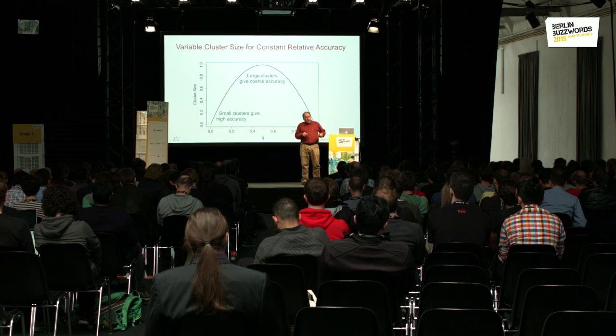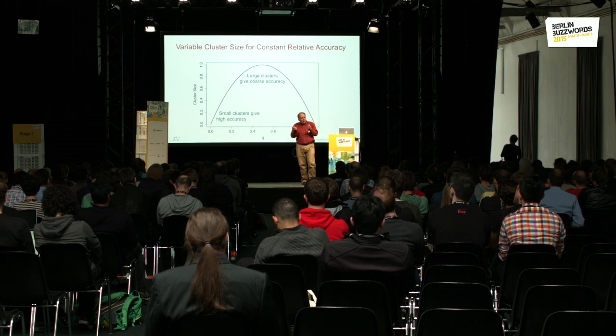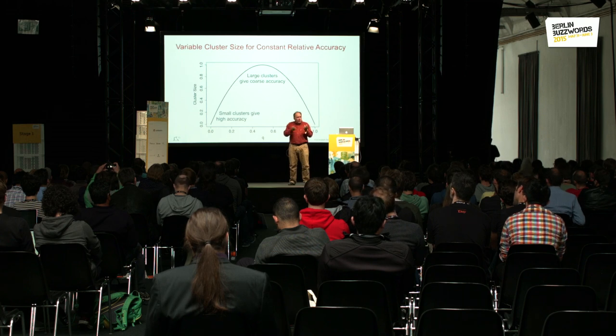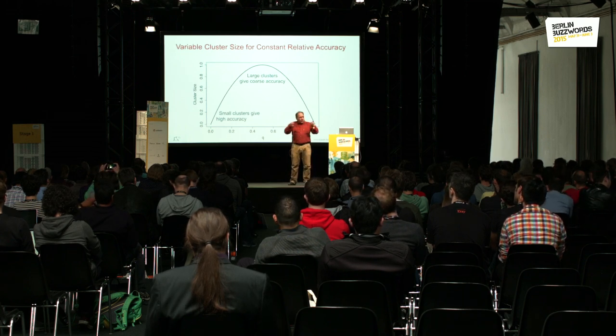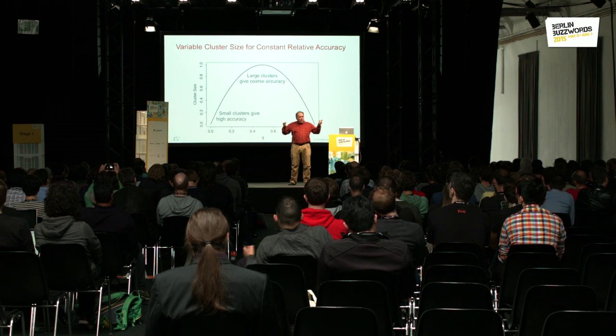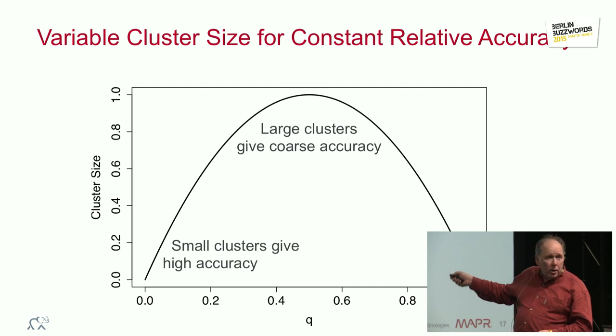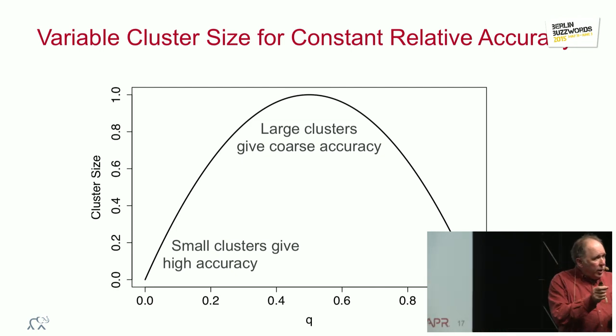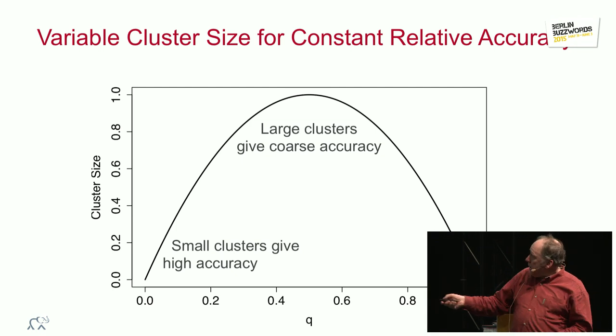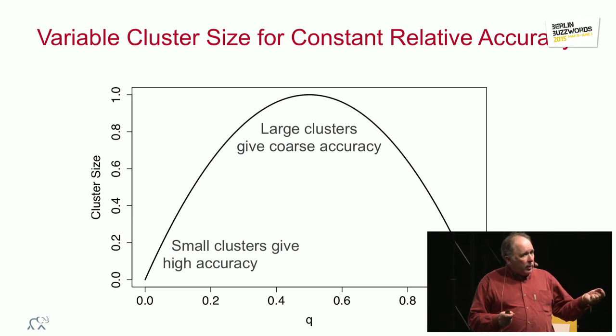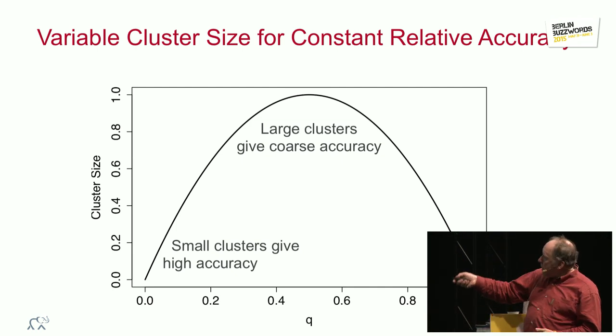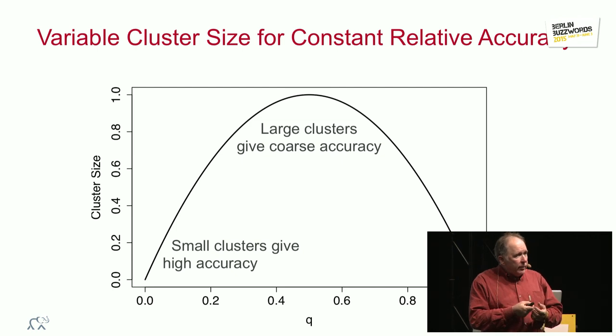Now, the way it does this is it keeps something like clusters. In fact, the original versions of the algorithm were almost exactly a k-means algorithm in one dimension, with the big difference that the size of the cluster was allowed to be large in the middle, where q equals about .5, and had to be small at the zero end and at the one end.